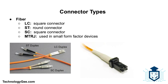Fiber optic devices and cables use one of several connector types: the LC connector uses a square connector; the ST uses a round connector; the SC uses a square connector; and the MTRJ connector is very popular for use in small form factor devices due to its small size.